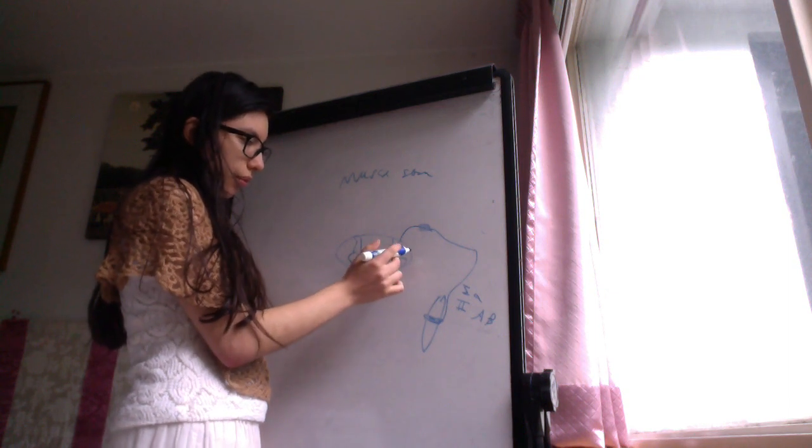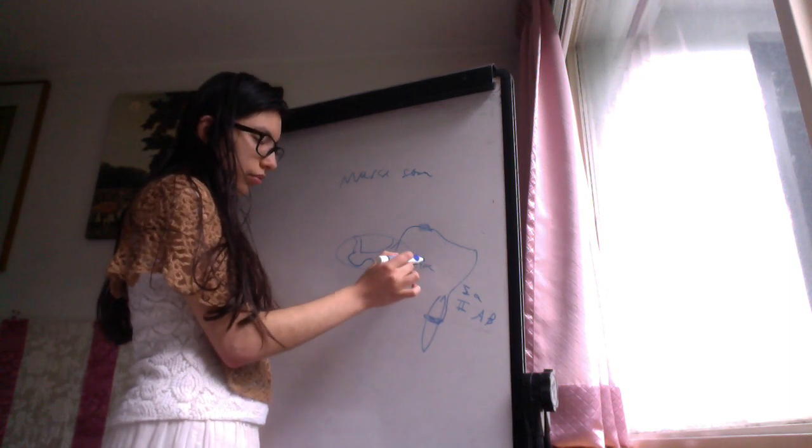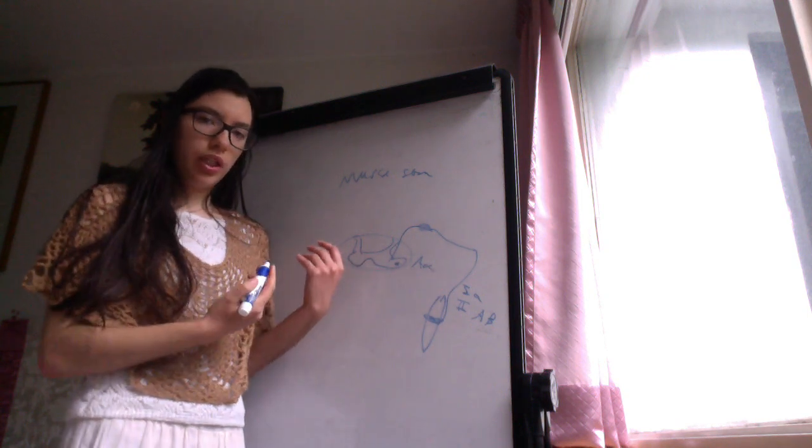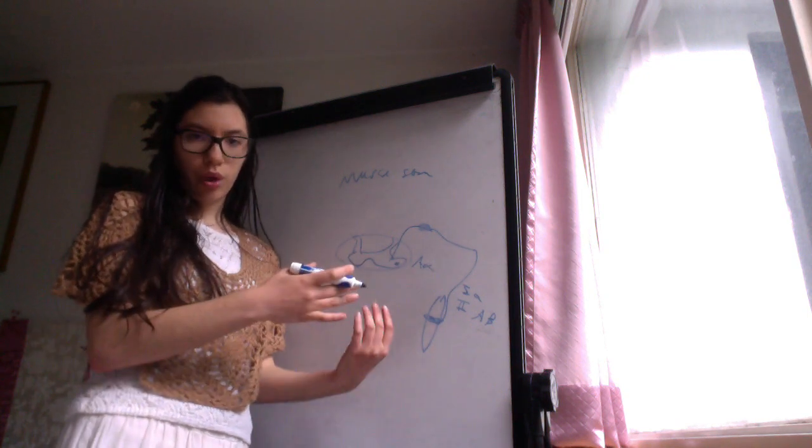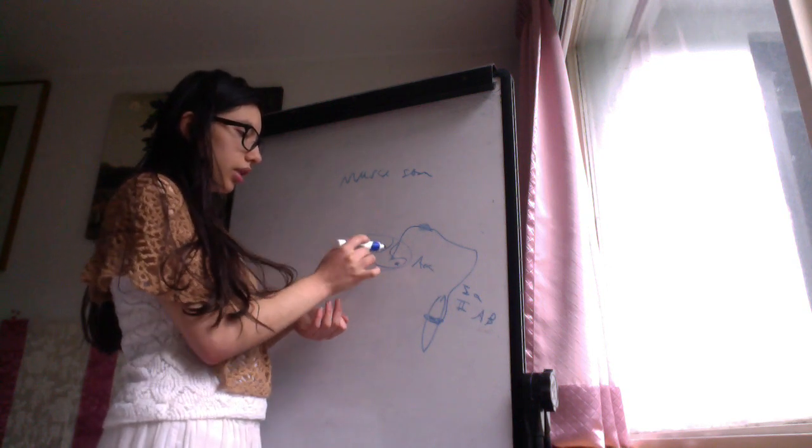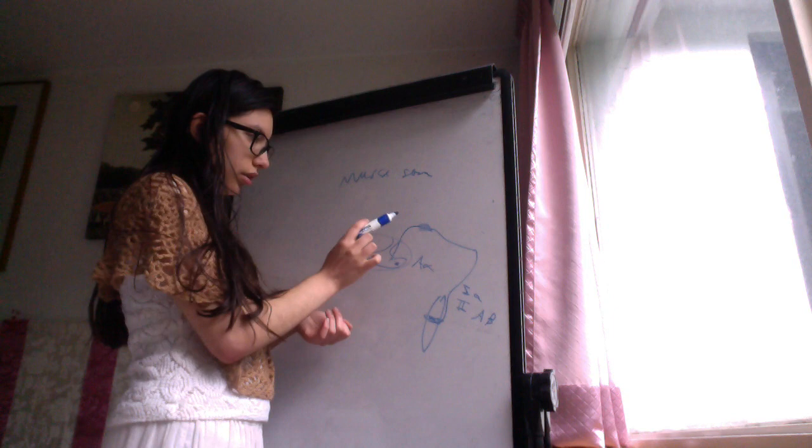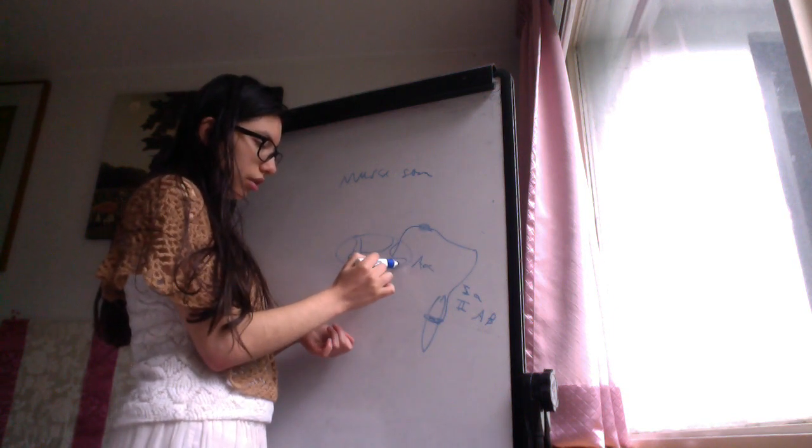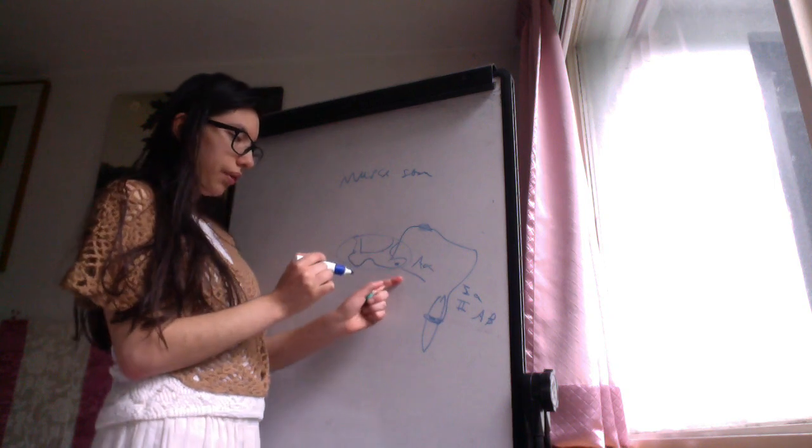And in the anterior horn we have two types of neurons. Two alpha motor neuron, A-alpha. Also it would be alpha type 1A fiber, but this time is the motor output that is carrying out. And the synapse would be between this sensory fiber and this lower motor neuron, alpha lower motor neuron.